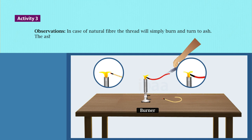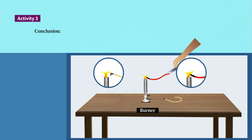Observations: In case of synthetic fiber, the thread will melt, bubble, and drip. In case of natural fiber, the thread will simply burn and turn to ash — the ash will be black and crispy or brittle. Conclusion: Natural silks burn and smell like burning hair, whereas synthetic silks melt.